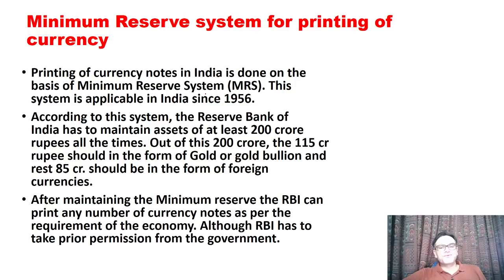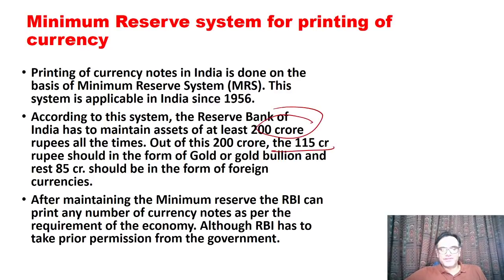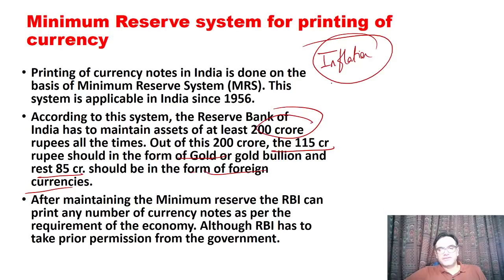How RBI can print money: there is a Minimum Reserve System, applicable since 1956. Under this system, RBI must maintain a minimum asset of rupees 200 crore, of which rupees 115 crore should be gold or gold bullion and the rest in foreign currencies. Maintaining this as a minimum asset, RBI can print as much currency as needed based on the inflationary situation in the economy to regulate money supply.